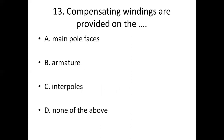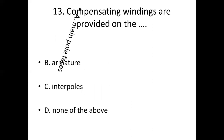Thirteenth bit. Compensating windings are provided on the dash. Option A: Main pole faces. Option B: Armature. Option C: Interpoles. Option D: None of the above. Answer: Option A, Main pole faces.